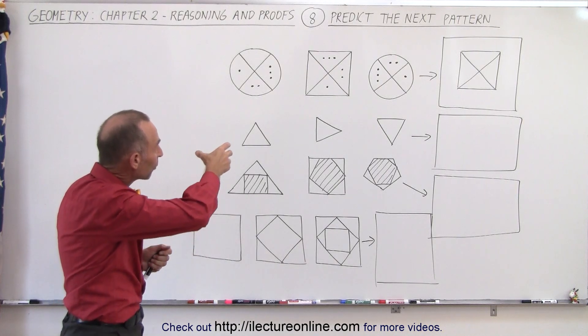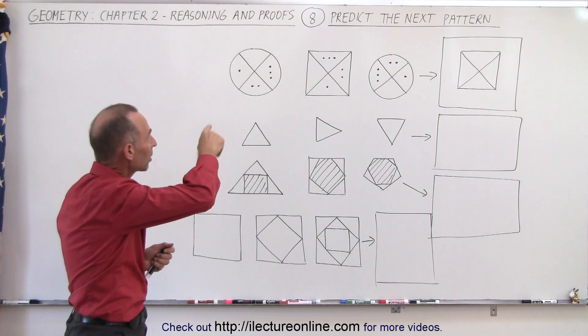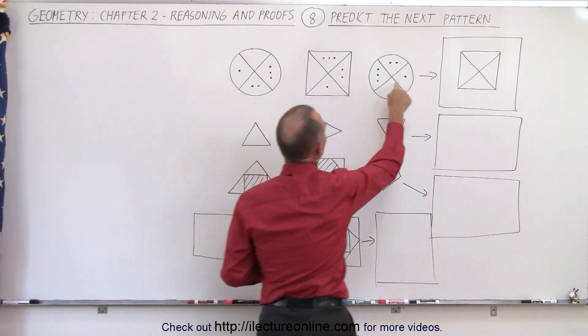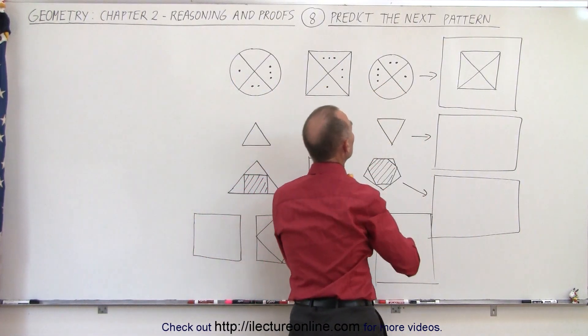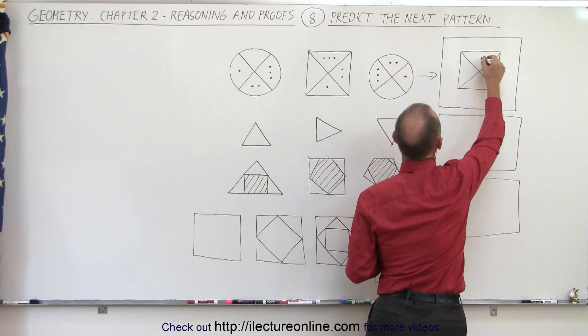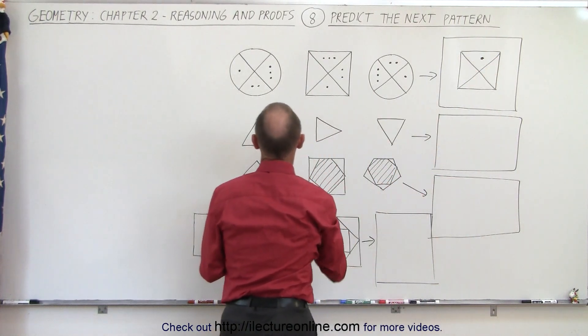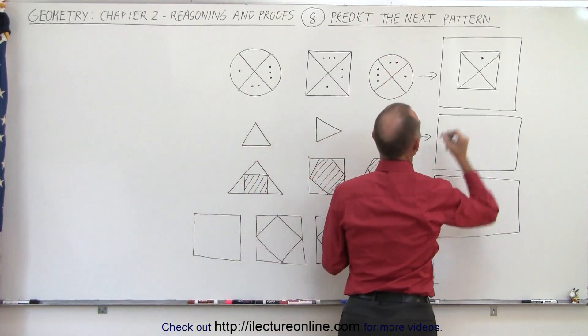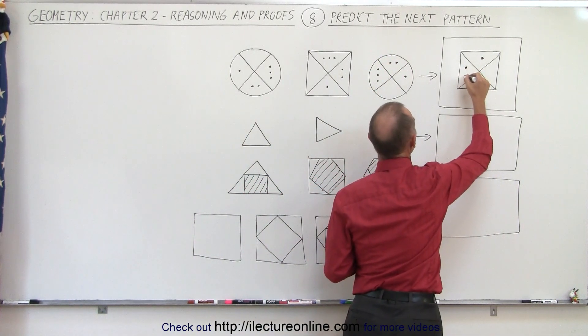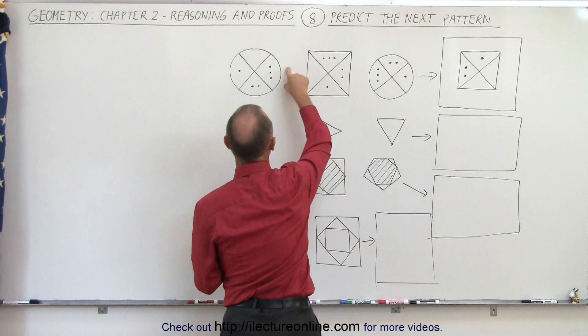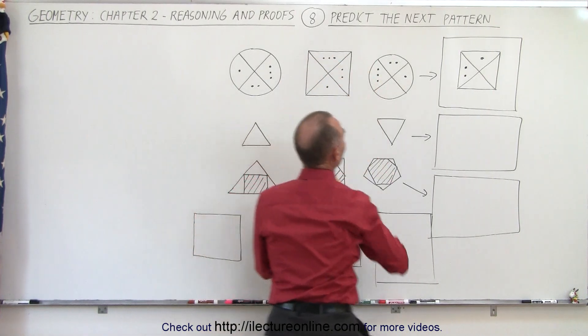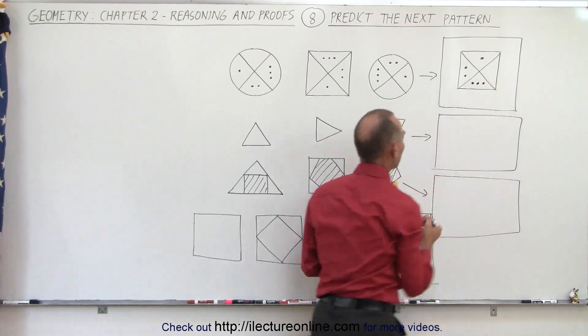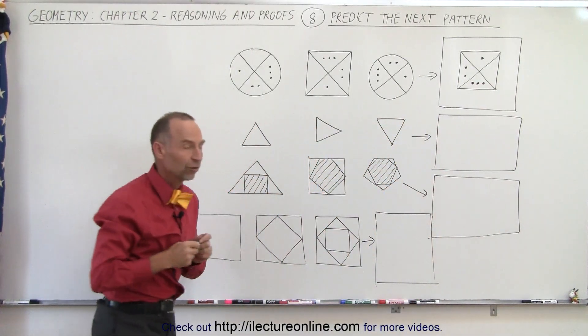And notice that they tend to go around the pattern in a counterclockwise direction. The one dot is here, then it is here, then it is there. If the pattern continues we can expect it to be over here. With the two dots it's down here, it's the side, it's the top, and again if the pattern holds we just have two dots over here. And with the three dots they're here, they're on top, they're on the left, and we'd expect them to be at the bottom. And that seems to be a reasonable pattern for that first series.